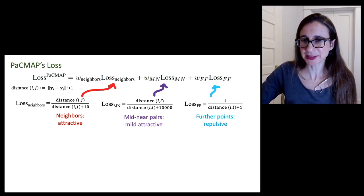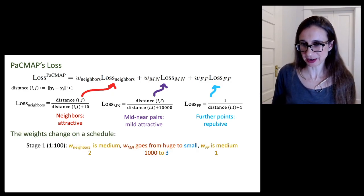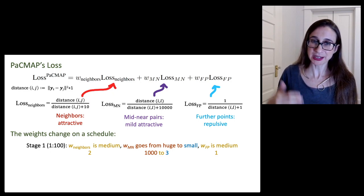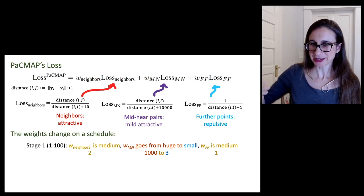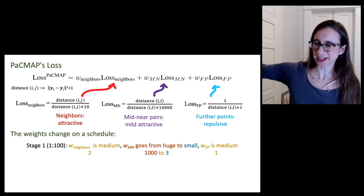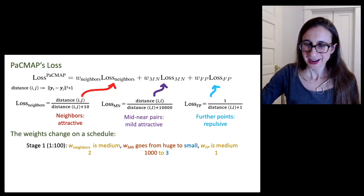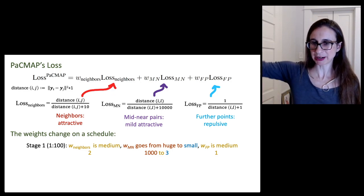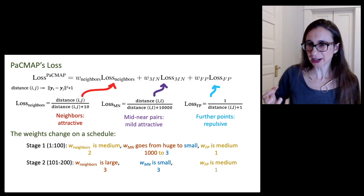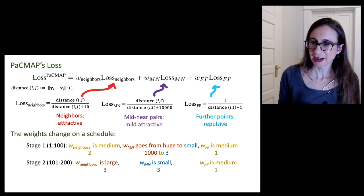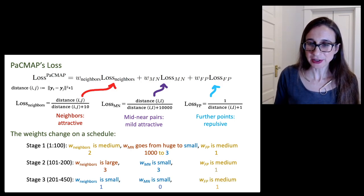The only thing I have left to do is to tell you what the different weights are and the weights change on a schedule. There's three stages of the algorithm in the first 100 iterations. The neighbor weight is two. The mid near pairs weight goes from a thousand to three. So it starts out really strong. Like I want to really pull in my further friends and then I'll kind of release their grip after a while. And then the repulsion force on further pairs is one. And then it changes a little bit. In the second stage, it really kind of tries to get the neighbors close to each other while still maintaining the mid near pairs and the further points.